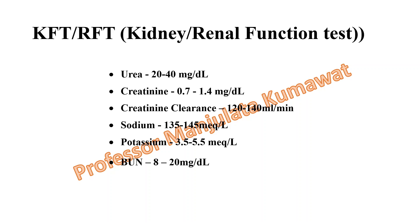For the renal function test (RFT), the important parameters are: urea 20 to 40 mg per dL; creatinine 0.7 to 1.4 mg per dL; creatinine clearance 120 to 140 mL per minute; sodium 135 to 145 milliequivalents per liter; potassium 2.5 to 5.5 milliequivalents per liter; and BUN (blood urea nitrogen) 8 to 20 mg per dL.